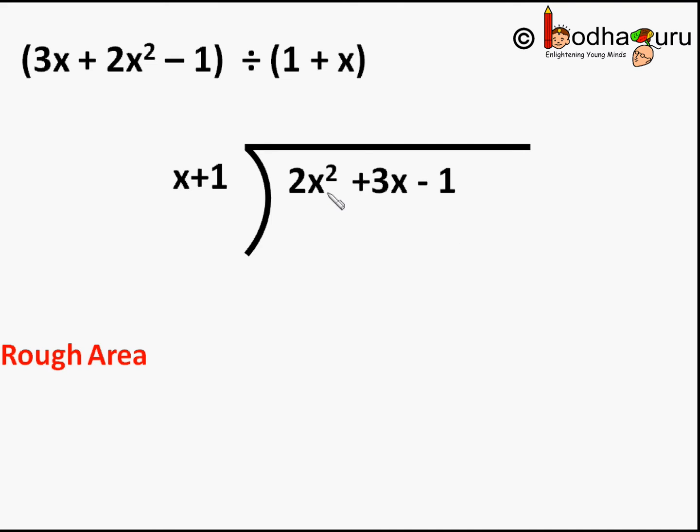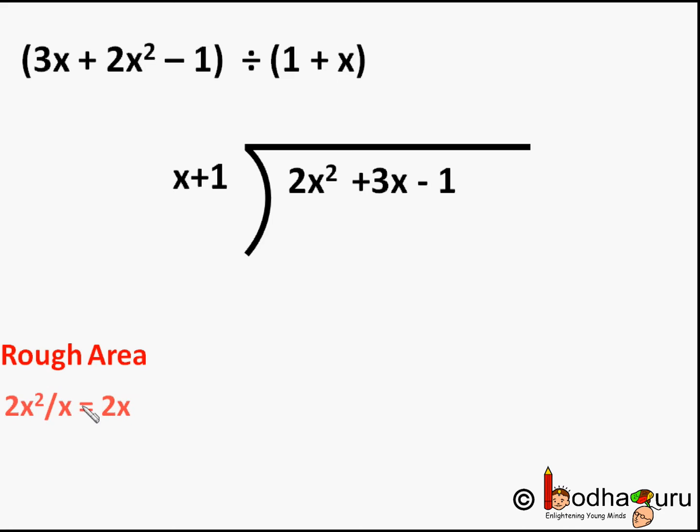Now we divide the first term of the dividend, that is 2x², by the first term of the divisor, that is x. That is, we divide 2x² by x. So what do we get? 2x. Because x² by x is equal to x, so 2x² by x is equal to 2x. This 2x becomes the first term of the quotient and we write it in the quotient section above the line.